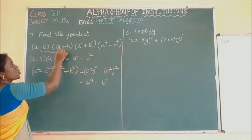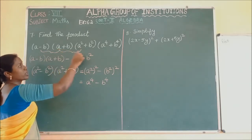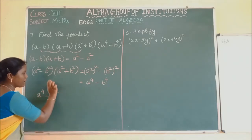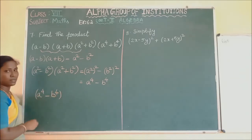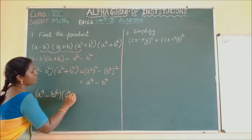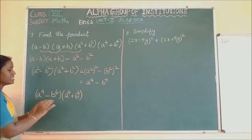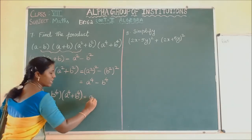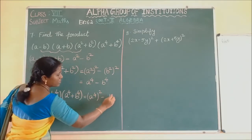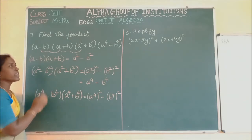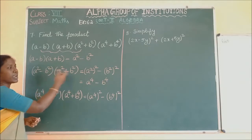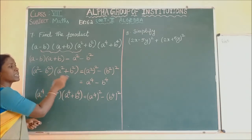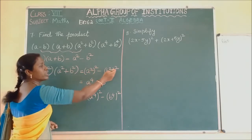Now we have the product of the first three terms as A power 4 minus B power 4. We multiply this with the fourth term A power 4 plus B power 4. Again this is in the form of A minus B into A plus B, where A is A power 4 and B is B power 4. Using the exponent rule A power M into N equals A power MN, we apply the identity.